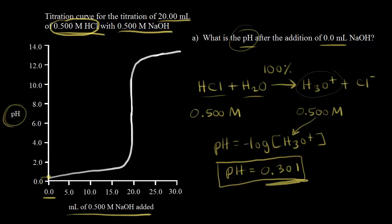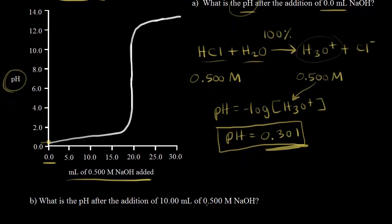Let's find another point on our titration curve — this time after we add 10 mLs of base. We find 10 mLs on the x-axis and we're trying to find that point. What is the pH after we add 10 mLs? It looks like it's pretty close to one. Let's calculate it. The hydroxide ions we're adding are going to neutralize the hydronium ions already present. First, let's calculate how many moles of hydronium ions we had present.